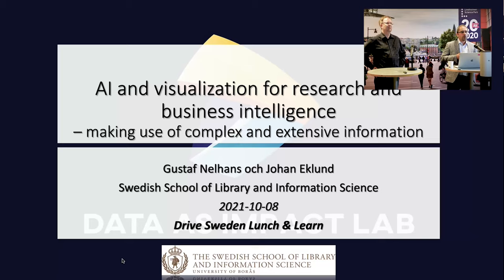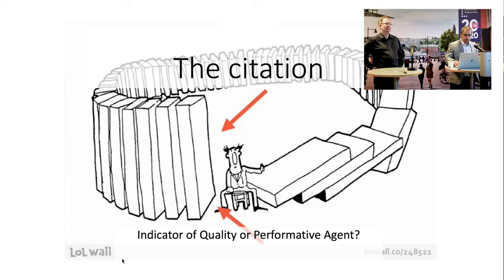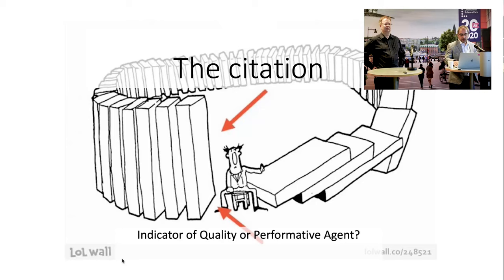There are others working on it internationally, but we are going to international conferences and presenting our things as interesting findings. I will start by saying something about bibliometrics and specifically the citation, because the citation is very important in the work that we do here — we try to combine the references that become citations in the citation index with text in our analysis.